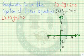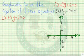So let's graphically solve the system of linear equations: 2x plus 3y plus 6 equals 0, and 2x plus 3y minus 4 equals 0. We start with our original equation, our first equation.